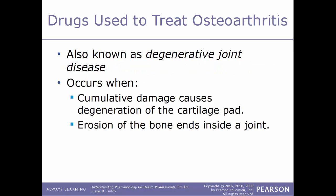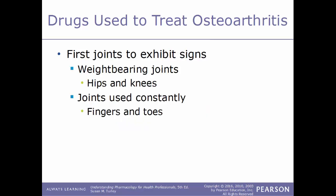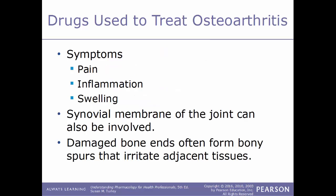We'll start by talking about drugs used to treat osteoarthritis, also known as degenerative joint disease. It occurs when cumulative damage causes degeneration of the cartilage pad, induced by normal wear and tear on the joints — essentially an erosion of the bone ends inside a joint. The first joints to exhibit signs of osteoarthritis are weight-bearing joints such as the hips and knees, and joints used constantly like fingers and toes.